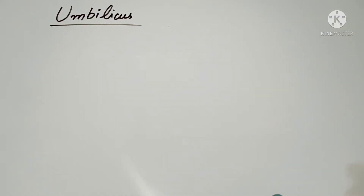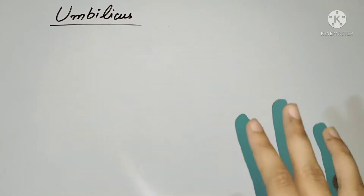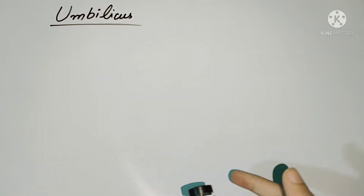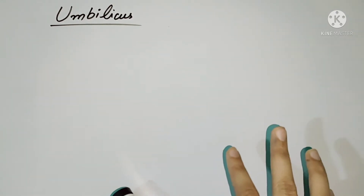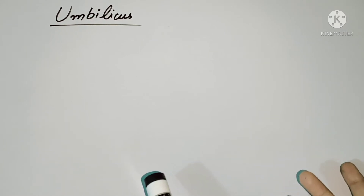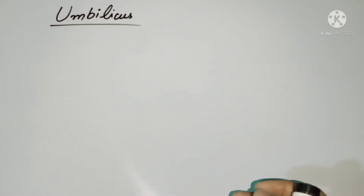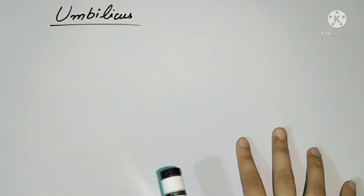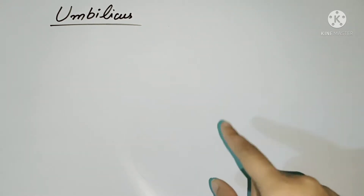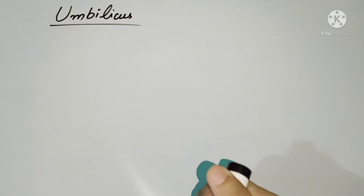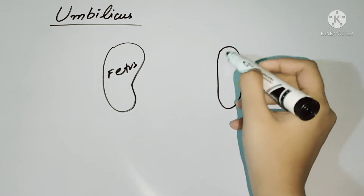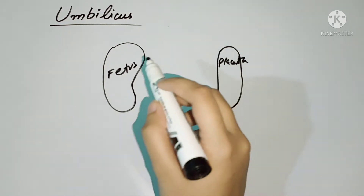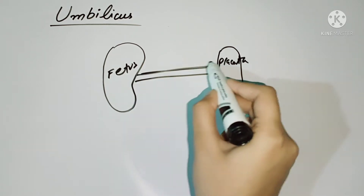Welcome to this new video. We will talk about the umbilicus. By definition, the umbilicus is a scar in the anterior abdominal wall. The umbilicus develops in the fetus before birth, forming the connection between the fetus and the placenta.